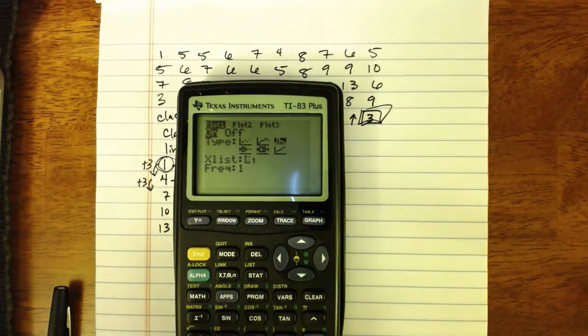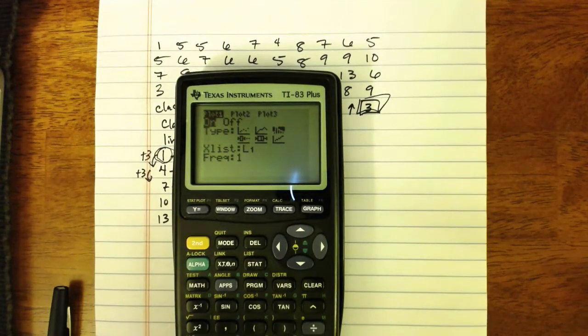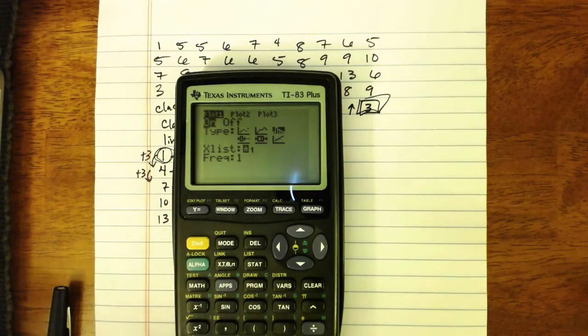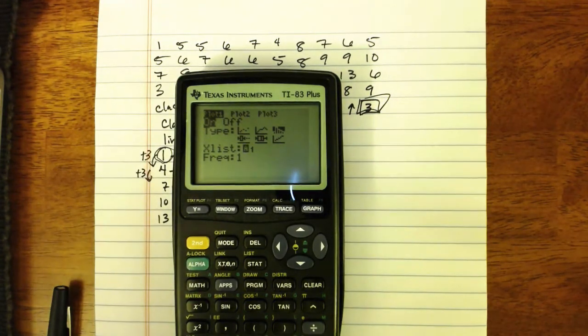Now, at this point, if you just wanted to get a picture of a histogram, you can actually press zoom and the number 9, and your calculator will auto-size your window to give you a histogram. That being said,